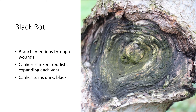Most importantly, the Black Rot pathogen causes infections of stems and branches, usually at some sort of wound or pruning cut. This image shows that branch union in the center where the fungus got in and then spread. Almost always a wound is where this infection will occur. The cankers start out as sunken and reddish, expanding each year and turning dark and black. You'll see concentric rings — those are annual rings — as the pathogen becomes active each year and callusing occurs.